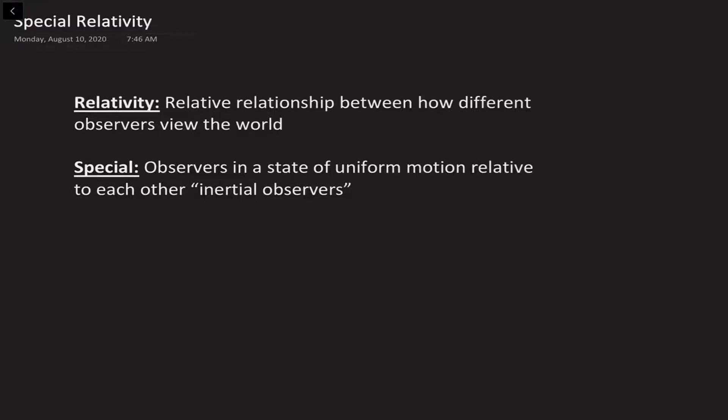So let's begin by first discussing what we mean by special relativity. Relativity very simply means the relative relationship between how different observers view the world. And special implies that you're talking about a special class of observers, and these are observers who are in a state of uniform motion relative to each other. That is, they're moving at constant velocity with respect to each other. And these observers are what we call inertial observers.